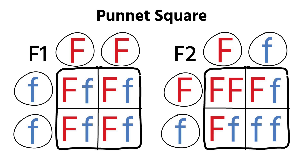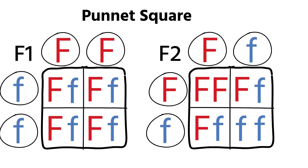These will definitely come up to some extent in your A-level. There are two slightly more complicated things we have to look at for specific genes in monohybrid crosses. The first example we're going to look at is how some genes have codominant alleles.